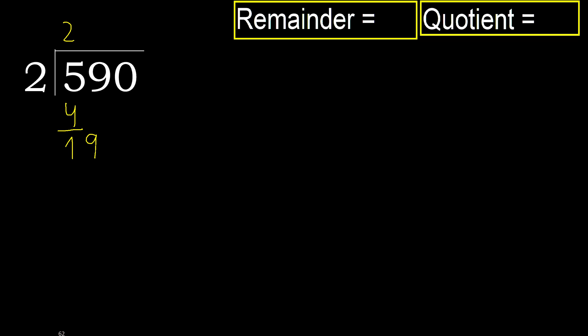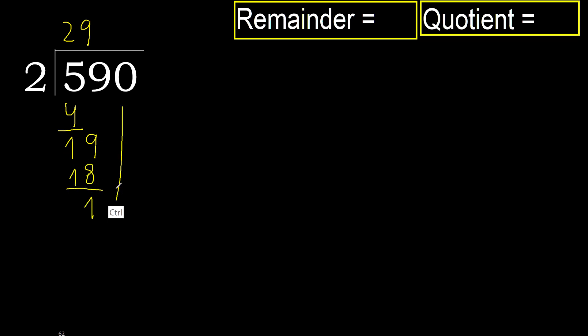Next: 19. 2 multiplied by 9 is 18. 18 is not greater, subtract 1.